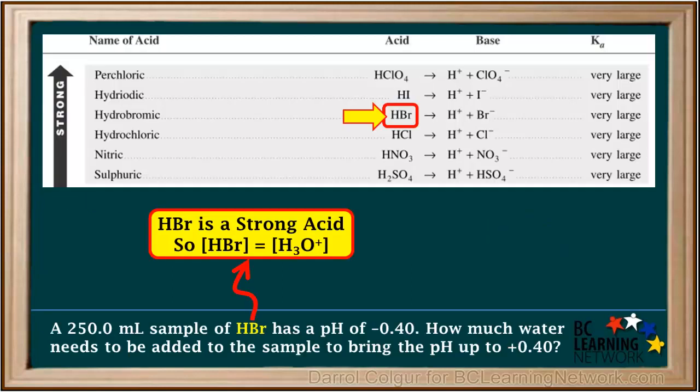Looking at HBr, we see that it's a strong acid, so the concentration of HBr is equal to the concentration of hydronium. Any hydronium ion concentration in the solution to this problem will be equivalent to the concentration of HBr.